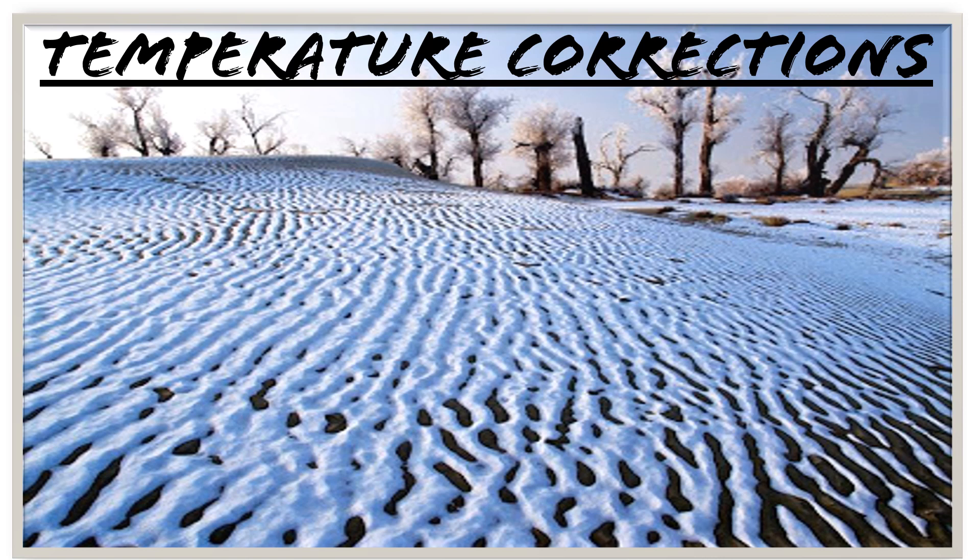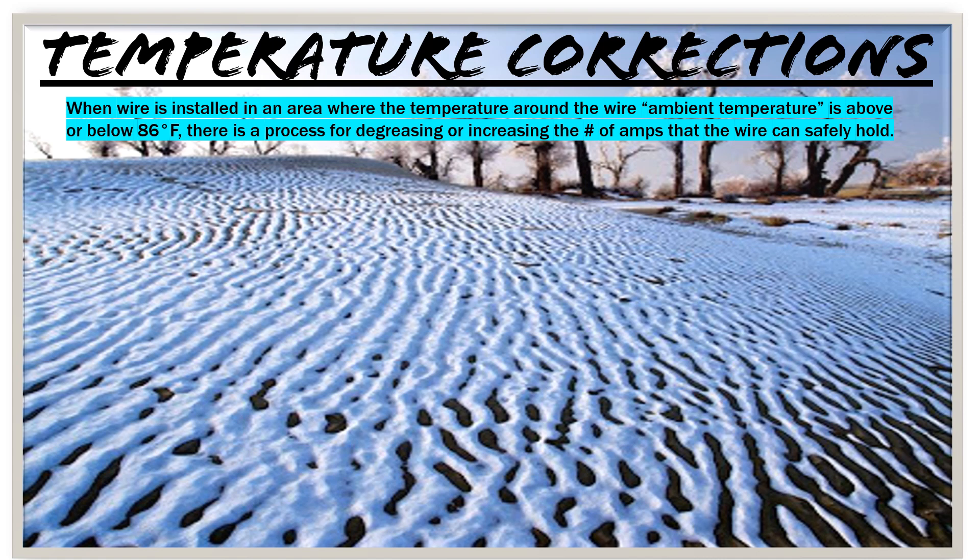So whether we're running wire in the desert or in the snow — or like in the case of this photo, in the desert in the snow — the table that we use primarily for Ampacity is based on the wire being in an area that is 86 degrees Fahrenheit. When the wire isn't installed where the ambient temperature is above or below 86°F, there's a process for decreasing or increasing the number of amps the wire can safely hold. Simply put, if the ambient temperature is above or below 86°F, we have to adjust the allowable ampacity of that conductor.